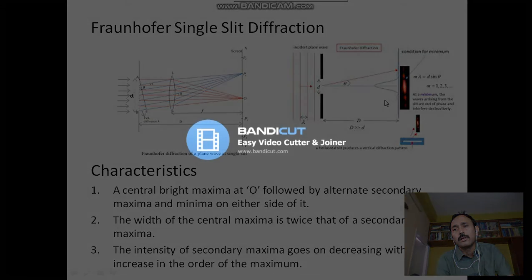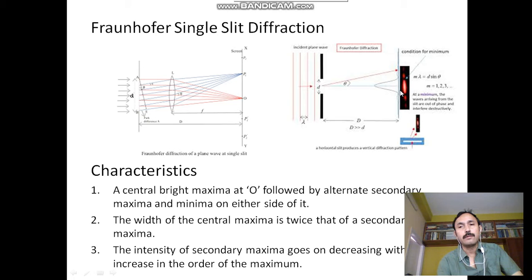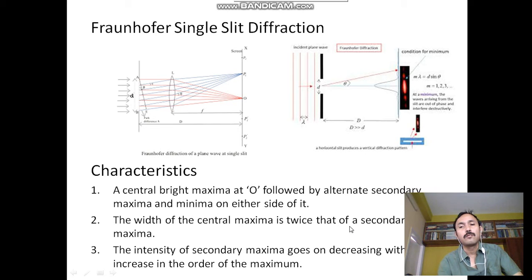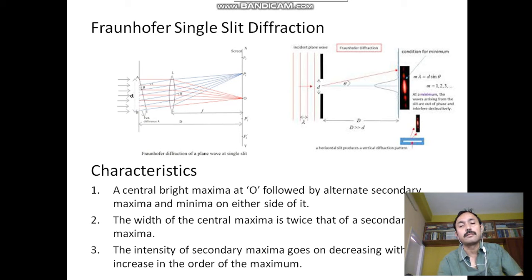The characteristics of Fraunhofer single slit diffraction: a central bright maximum at O, followed by alternate secondary maxima and minima on either side. The width of the central maximum is twice that of the secondary maxima. The intensity of secondary maxima goes on decreasing with increase in the order of maxima — as the order increases, the intensity of the secondary maxima decreases.